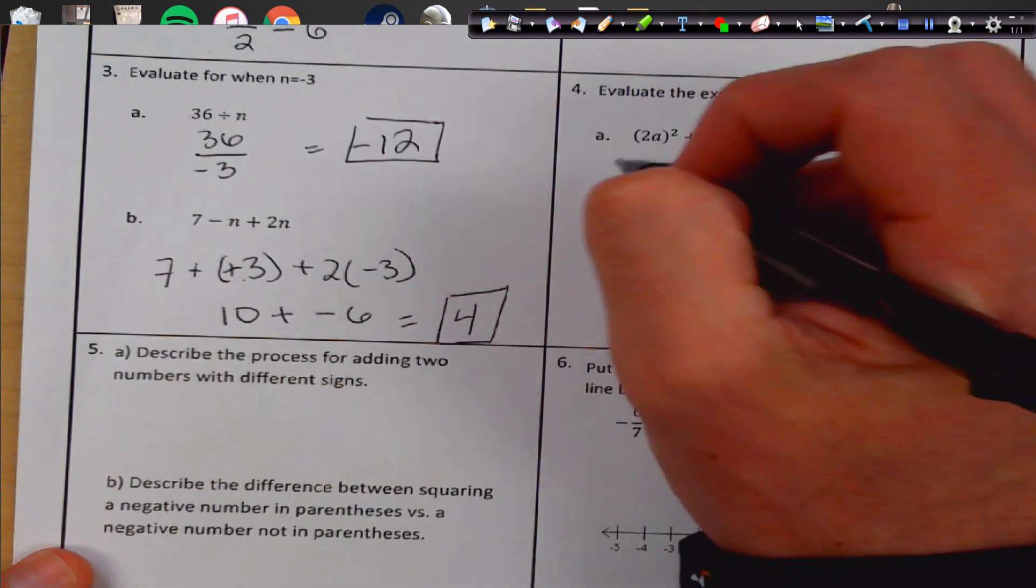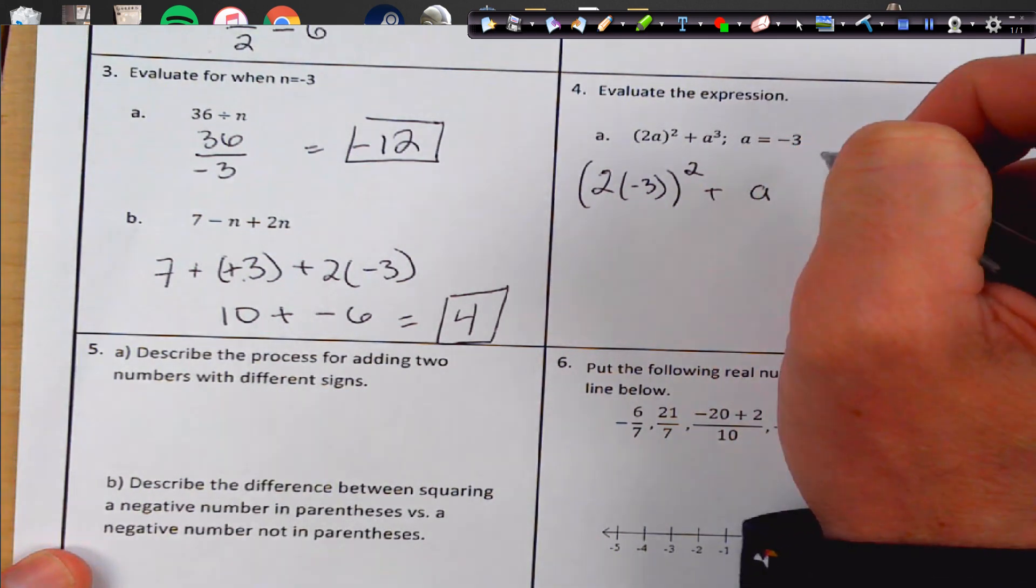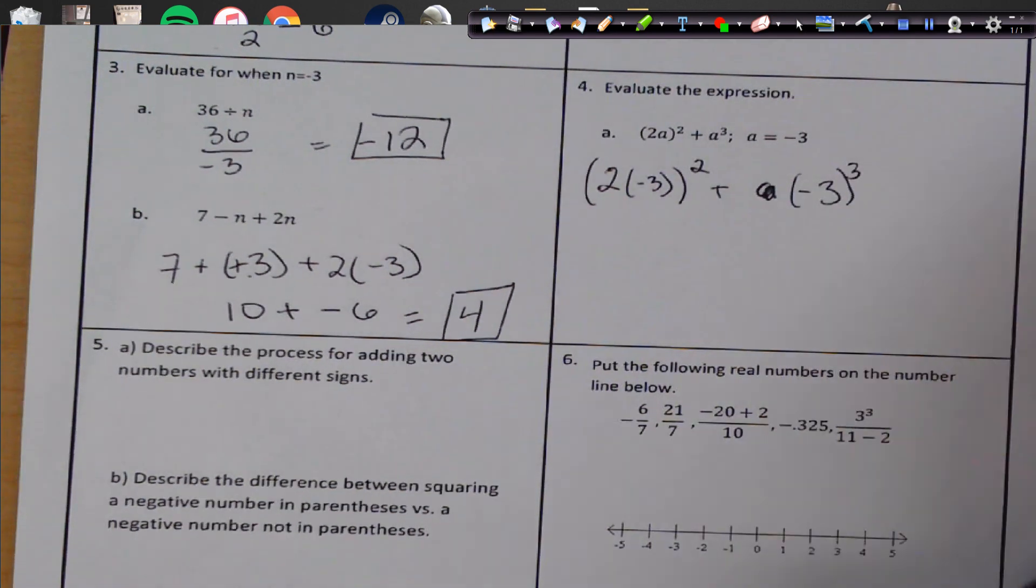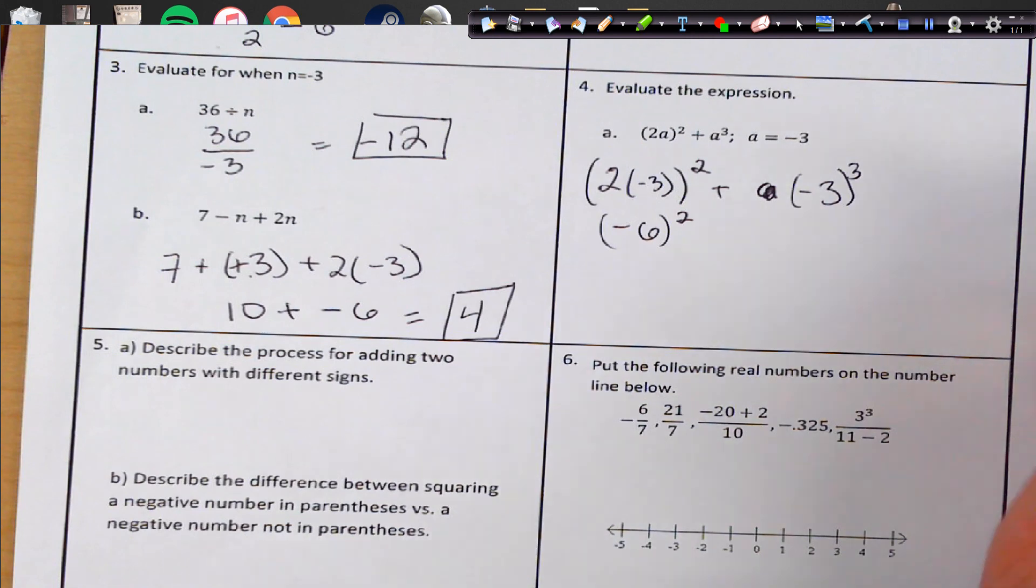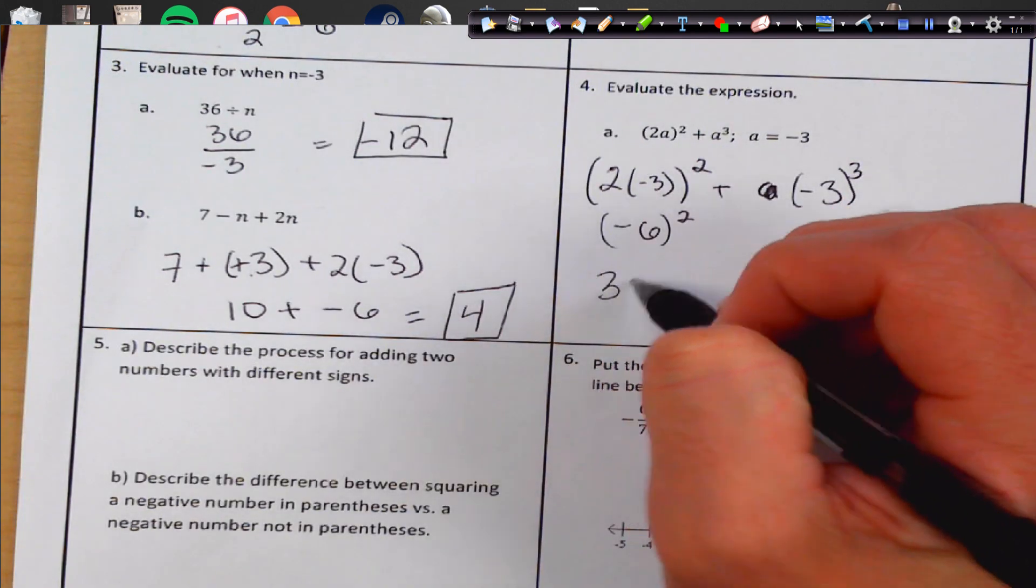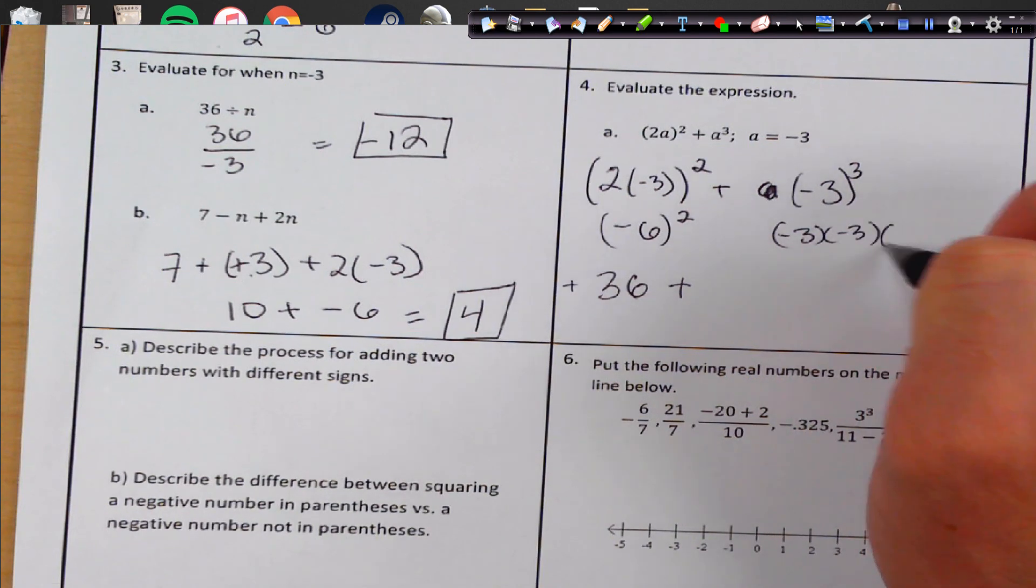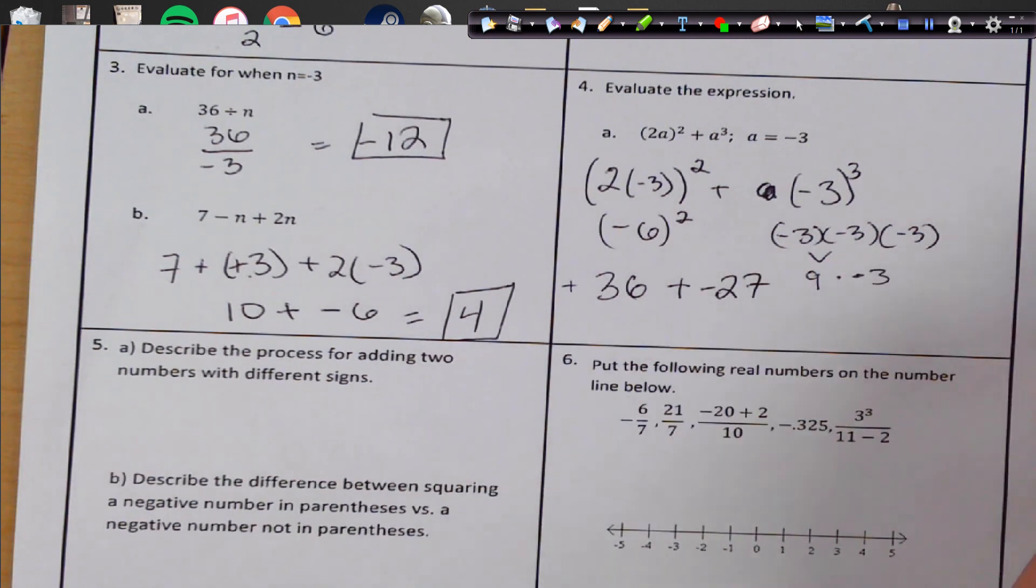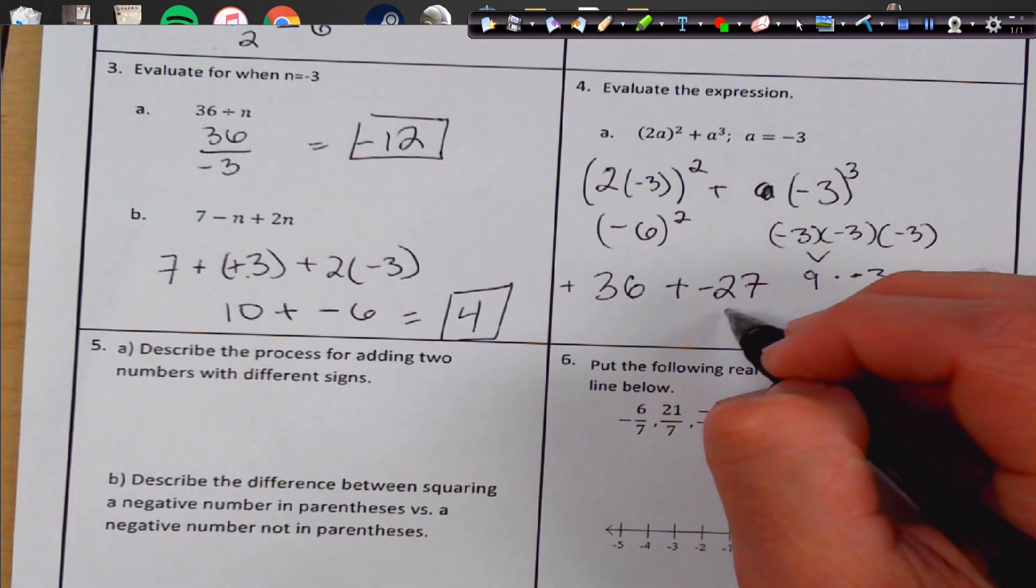Over here, we're going to plug in a, so we get 2, negative 3, all this is squared. Plus a, sorry, which is negative 3, I don't know why I put a, negative 3 to the third power. And this is in parentheses. So 2 times negative 3 is going to give me negative 6, negative 6 squared. Notice the negatives in the parentheses. This is going to become 36 positive. Plus, negative is in there, so we're going to have to write this out. 3 times negative 3 times negative 3 times negative 3. So that's going to be 9 times negative 3. So I'm doing a positive times a negative. It's going to be a negative 27. Add those together, we have a positive and a negative, so we're going to get smaller. And they should be a positive 9 units apart.